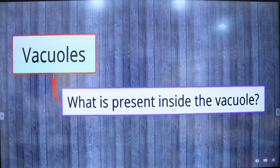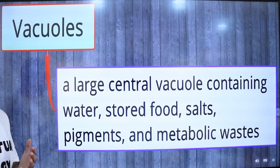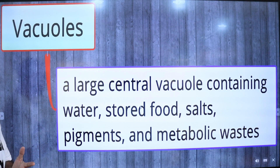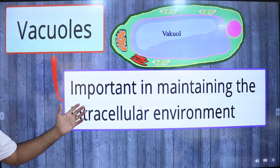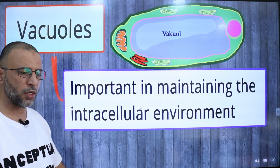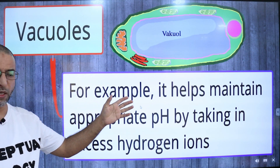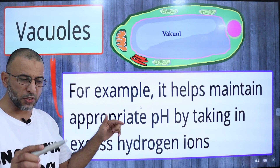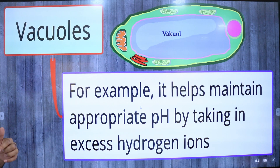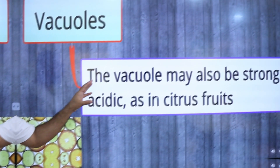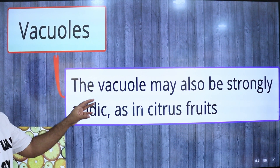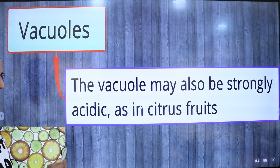What is present inside the vacuole? A large vacuole contains water, stored food, salts, pigments, and metabolic waste. Vacuoles play an important role in maintaining the intracellular environment — for example, they help maintain appropriate pH of the cytoplasm by taking in excess hydrogen ions. Vacuoles may be strongly acidic, as in citrus fruit.